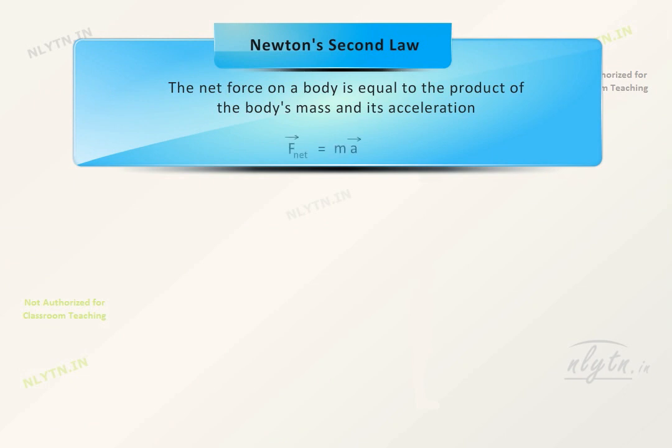That is, F_net is equal to mass into acceleration of the body. So from this equation, we can say that SI units of force will be equal to kg into meters per second square, which is also called Newton.